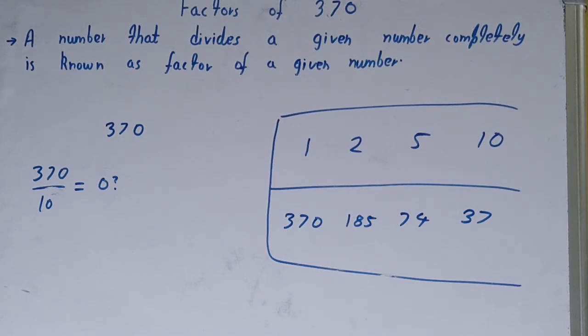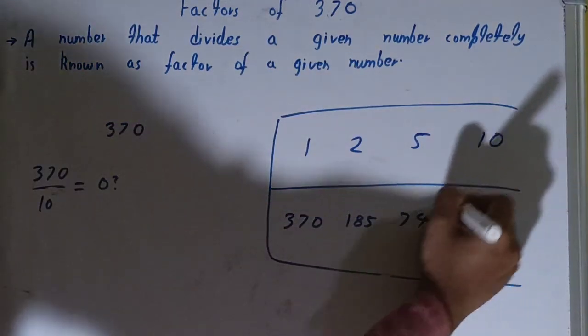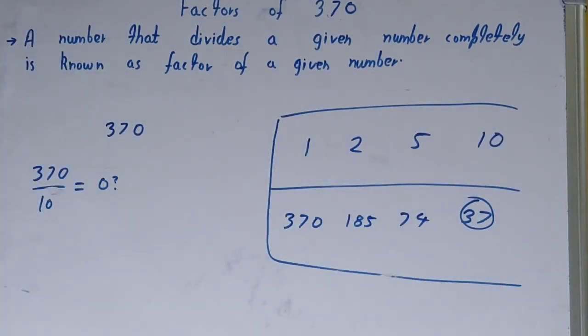Now one thing you need to see very carefully over here. In the second row or in the last row, we have got a prime number in the form of 37. So whenever you spot a prime number in the second row or in the last row, your work is done then and there only. You don't need to check any further.